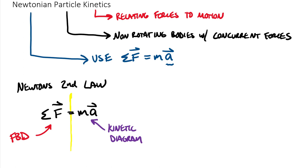There's an additional equation for rotational motion: the sum of moments equals I times alpha, where I is the mass moment of inertia about the point you're summing moments about. The left-hand side comes from the free body diagram and the right-hand side from the kinetic diagram. Luckily, we don't have to use the sum of moments equation until the second half of dynamics when we get into rigid bodies.